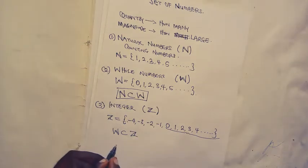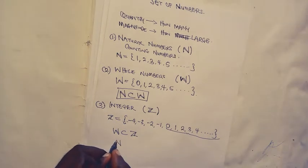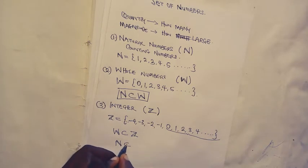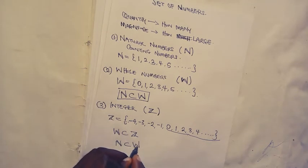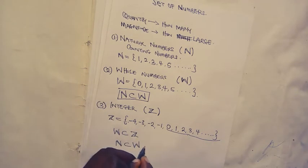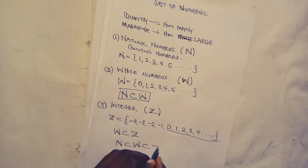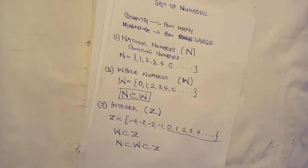So we can see that whole numbers are also subsets of integers. And since natural numbers are subsets of whole numbers, they are also subsets of integers.